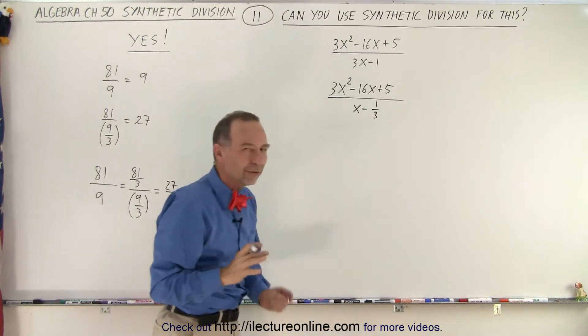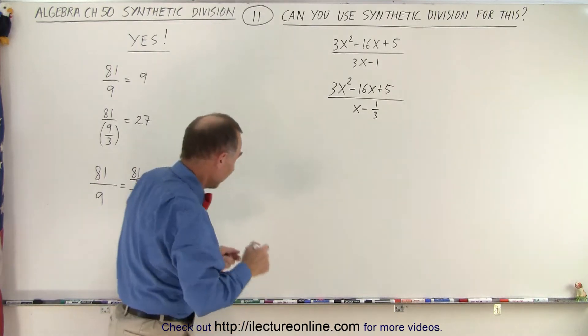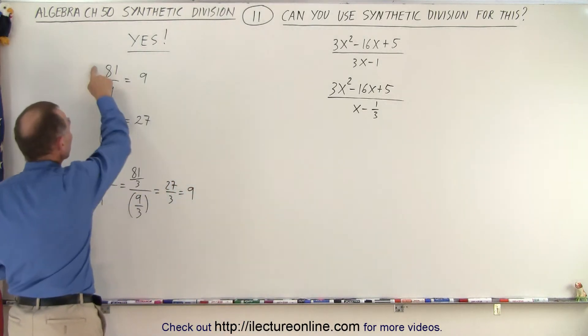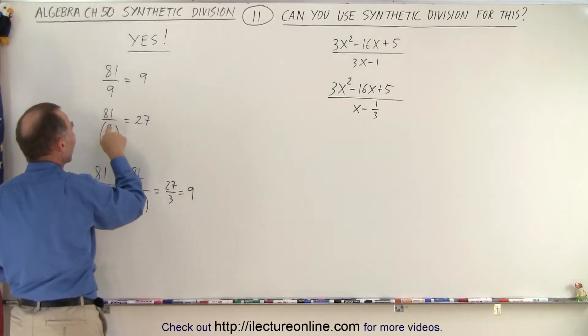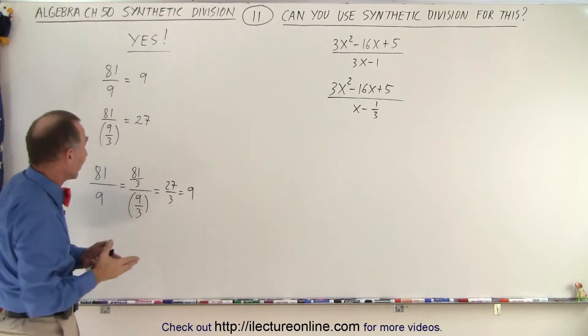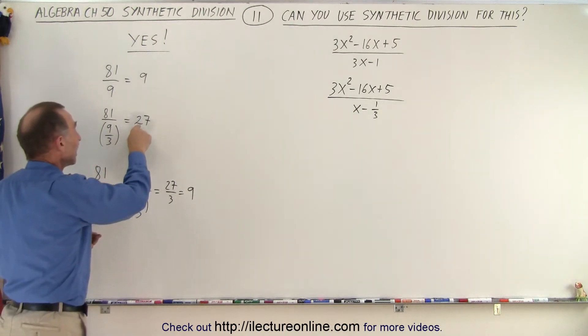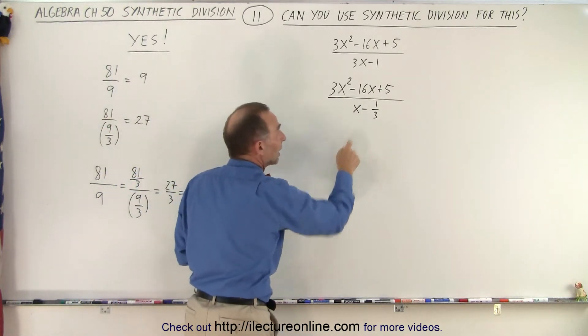Now notice that I divided the denominator by 3, which means my answer is now going to be 3 times as big. For example, if I have 81 divided by 9, I get 9. But if I divide 81 divided by 9 divided by 3, essentially I'm taking 81, dividing it by 3, I get 27. My answer is going to be 3 times as big because I divided the denominator by 3.